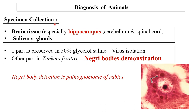Specimen collection includes brain tissue and salivary glands — specifically from the hippocampus, cerebellum and spinal cord. The specimen is divided into two parts: one sent to microbiology preserved in 50% glycerol saline (formalin must not be used as it kills the virus and makes isolation impossible), and one sent to pathology fixed with Zenker's fixative to demonstrate Negri bodies. Negri bodies are inclusion bodies and are pathognomonic of rabies.